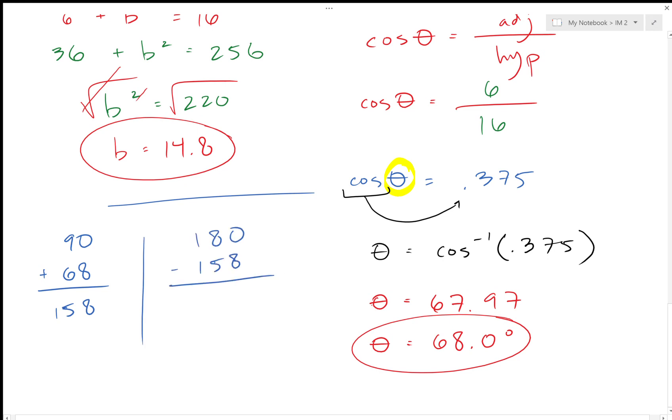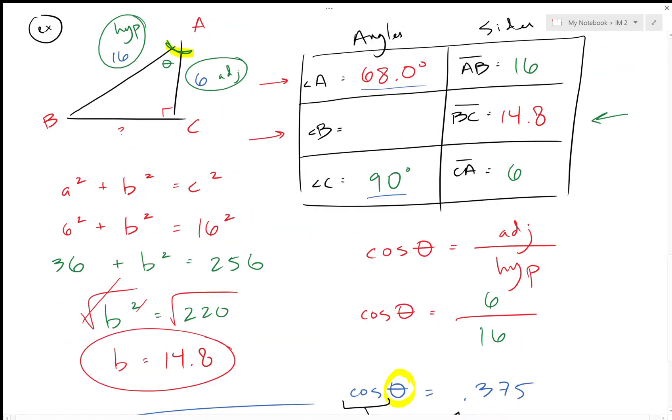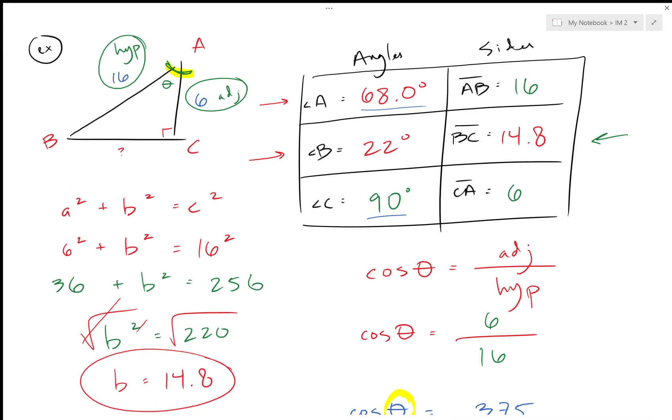So 180 minus 158, we come out to 22 degrees left. So the missing angle here, 22 degrees. And there we have all our angles filled in, we have all our sides filled in, we have solved the entire triangle.